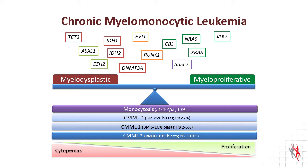CMML, by virtue of its core characteristics of having myelodysplastic and myeloproliferative features, is really defined — its biology is really defined on the basis of the complement of genes that are mutated in a given patient. Mutations in genes such as TET2, ASXL1, and EZH2 typically confer a dysplastic type biological picture.